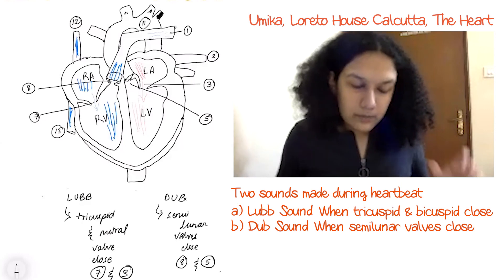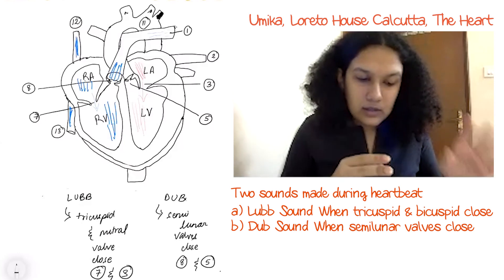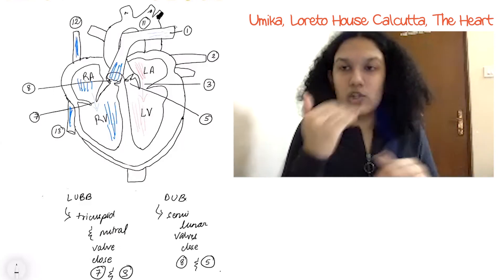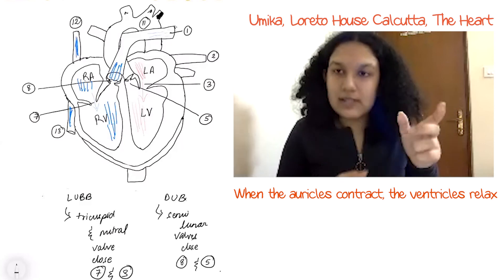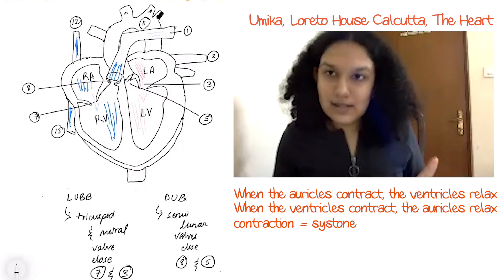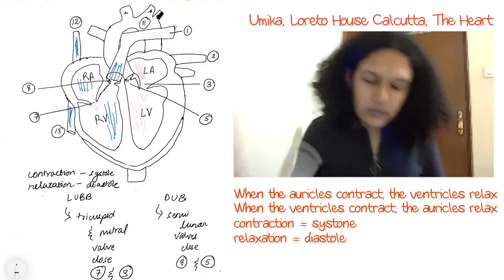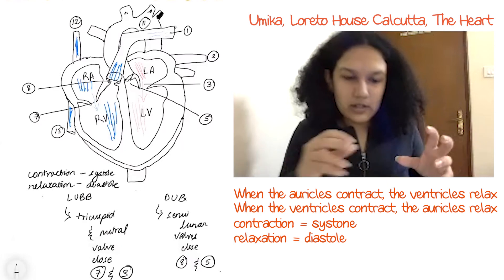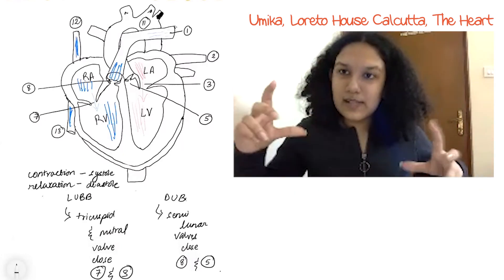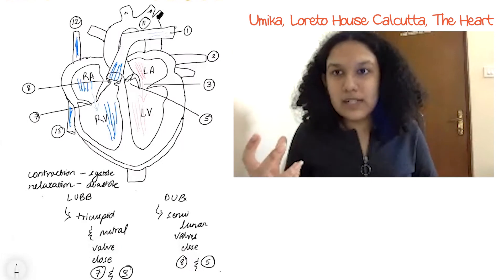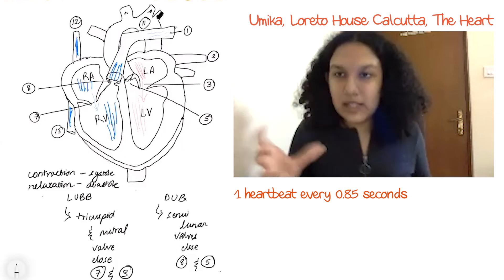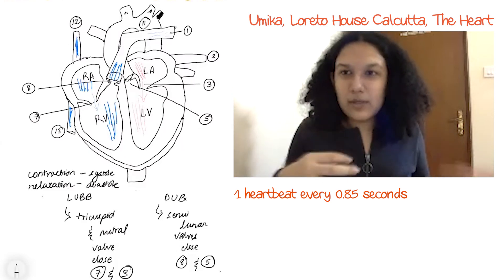Let's talk about the chambers more closely. When the auricles contract, the ventricles relax — they have an alternating movement. Contraction is called systole and relaxation is called diastole. It's pretty interesting how the heart is designed so that all four chambers serve different functions simultaneously. One full heartbeat happens every 0.85 seconds — in that time the entire circulation of blood and the cardiac cycle is completed.